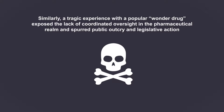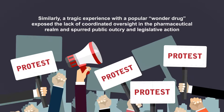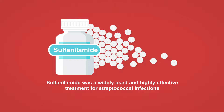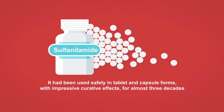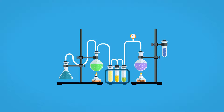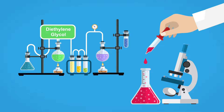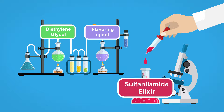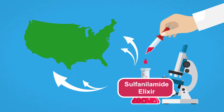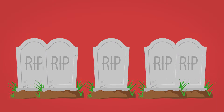Similarly, a tragic experience with a popular wonder drug exposed the lack of coordinated oversight in the pharmaceutical realm, and spurred public outcry and legislative action. Sulfanilamide was a widely used and highly effective treatment for streptococcal infections, and had been used safely in tablet and capsule forms with impressive curative effects for almost three decades. In an effort to satisfy a demand for a liquid form of the medicine, a new formulation was developed in which the drug powder was dissolved in diethylene glycol, the unpleasant taste was masked with a flavoring agent, and this new sulfanilamide elixir was quickly dispatched in September of 1937 to eagerly awaiting clinics throughout the various sections of the country.